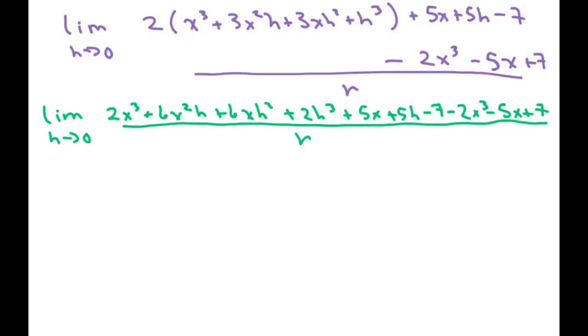Now when you're done with this, what you should notice is everything that doesn't have an h in it should cancel out. And if it doesn't, you probably did something wrong with your signs or something. So this doesn't have an h in it, so it does cancel out here. The 5x doesn't have an h. It cancels out.